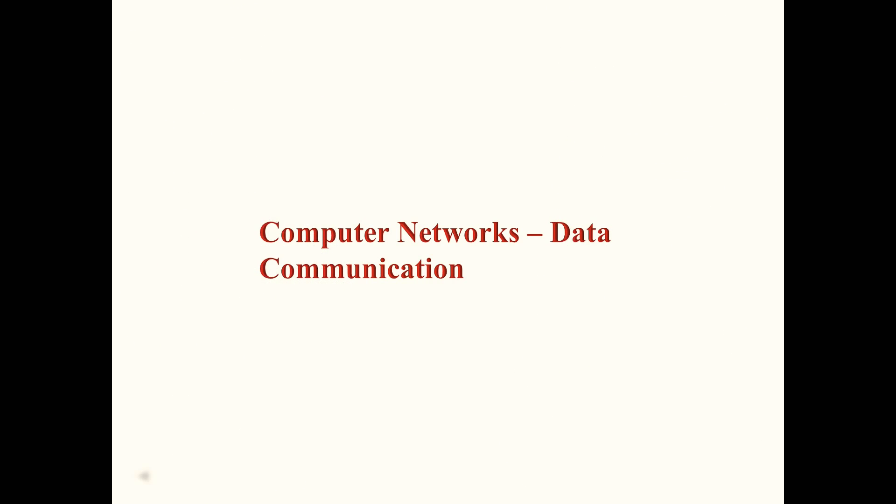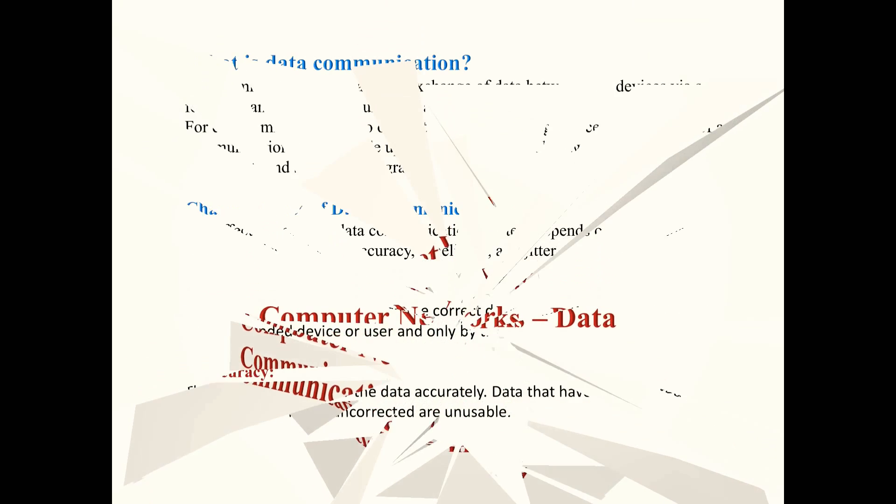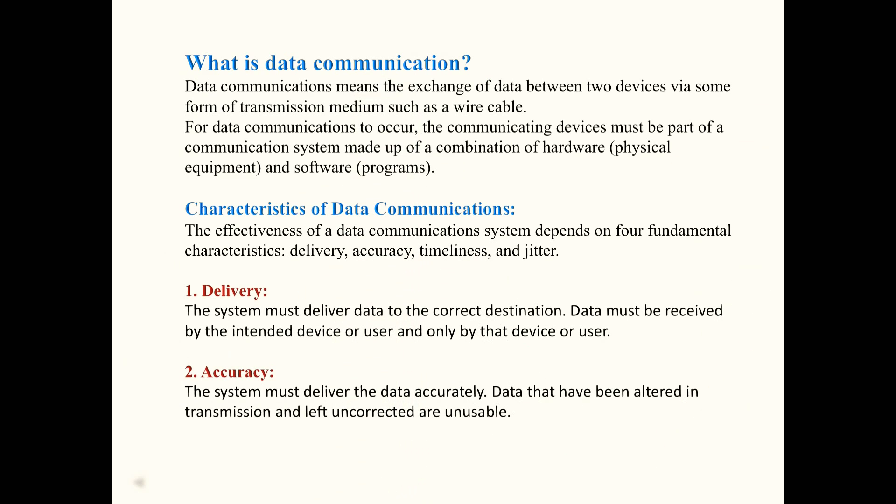Computer Networks — Data Communication. Data communications means the exchange of data between two devices via some form of transmission medium such as a wire cable. For data communications to occur, the communicating devices must be part of a communications system made up of a combination of hardware, physical equipment, and software, programs.